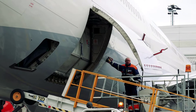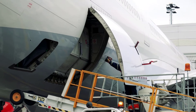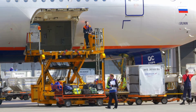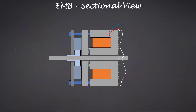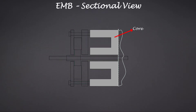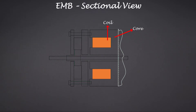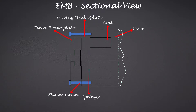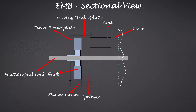Let's look at an EMB used in a cargo door actuation system application. The sectional view of the brake is shown here. It's mounted concentrically with the shaft, and the main parts include a magnetic steel core, a wound copper coil, fixed and movable brake plates, springs, spacer screws, and a friction pad that rotates with the shaft.